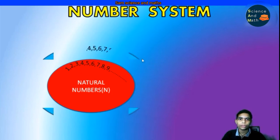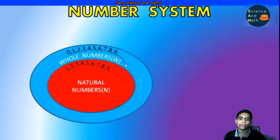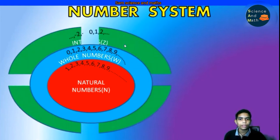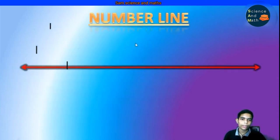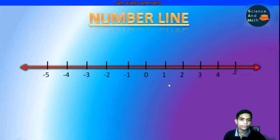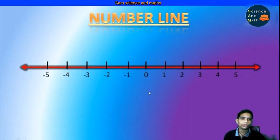Next is whole numbers, denoted by the letter W. It is the set of natural numbers along with 0. Next is integers, denoted by the letter Z. It is the set of positive and negative numbers along with 0. So here is a number line — here are negative integers, here is 0, and these are positive integers. 0 is separating positive and negative integers. You can easily plot such numbers on a number line.